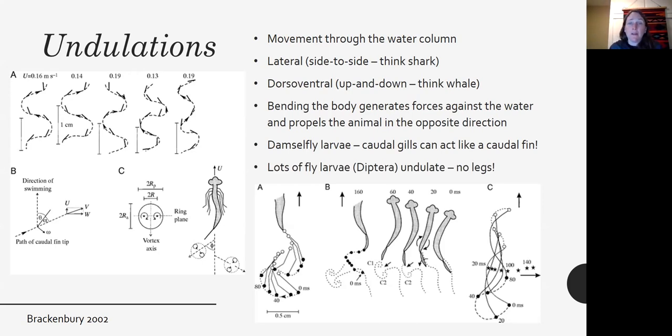A lot of fly larvae dipterans also undulate. And the reason they do that is they don't really have any legs. So it's one of the limited movements that they have.